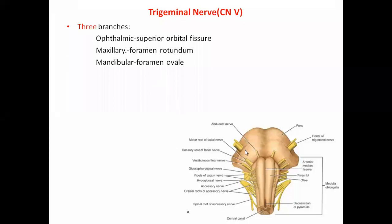The trigeminal nerve arises from the anterior aspect of the pons. All cranial nerves arise from the ventral aspect of the brainstem. The trigeminal nerve has two roots: a larger part representing the sensory root and a smaller part representing the motor root.